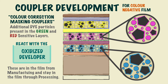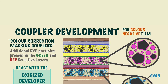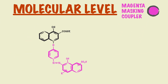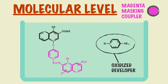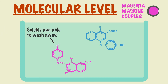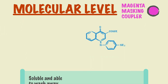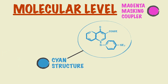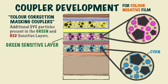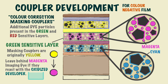So, in the red sensitive layer, the magenta masking couplers would become cyan. On a molecular level, when the original masking coupler reacts with the oxidised developer, the cyan structure is formed and the magenta structure is detached, making it soluble and able to wash away, leaving behind the cyan structure, which is now permanent imaging dye. This is the same with the green sensitive layer, where the masking couplers are originally yellow, but leave behind magenta imaging dye if they react with the oxidised developer.